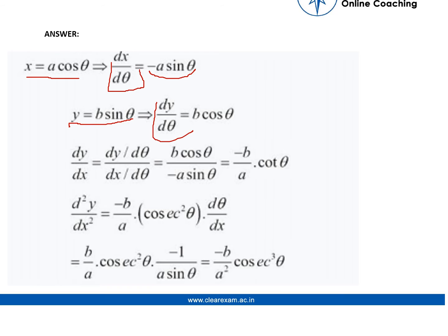Now if we take dy by dx, d theta gets cancelled and we have b cos theta upon minus a sine theta, which is nothing but minus b by a cot theta.